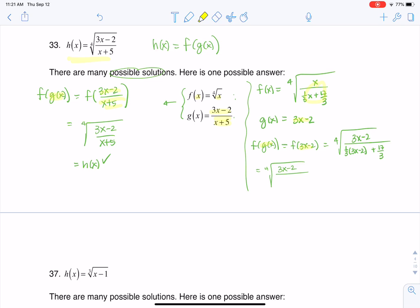All right, so if we're looking at this, like 1 third times 3x is x. 1 third times negative 2 is negative 2 thirds. So I will have x minus 2 thirds plus 17 thirds.